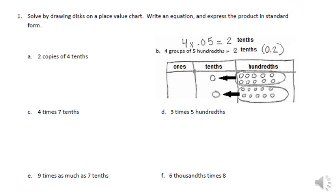Okay, if you look at problem one, it says solve by drawing disks in a place value chart. So you can see what they've done here is they've drawn a place value chart. It says four groups of five hundredths. So we're in the hundredths and we got one, two, three, four, five. And there's one group, two groups, three groups, four groups.